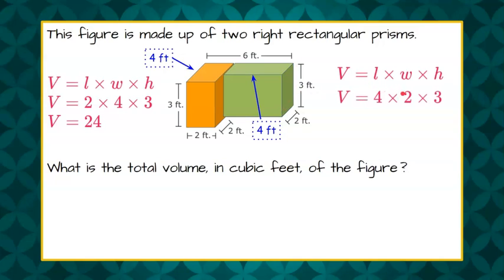So four times two times three. Again, interchangeable. Four times two is eight. And eight times three is 24.